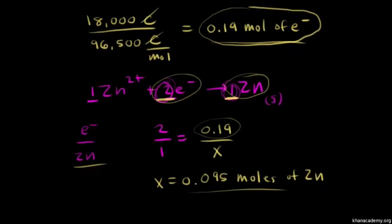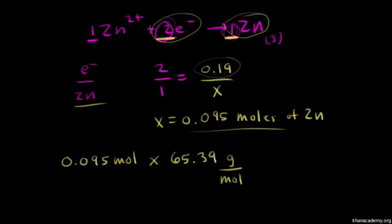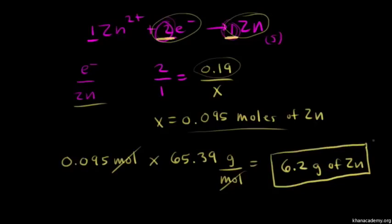Finally, we need to go from moles of zinc to grams of zinc. Our problem asked us for grams of zinc that were deposited. So going from moles to grams is pretty easy. You just multiply by the molar mass. So if you have 0.095 moles of zinc, and we multiply by the molar mass of zinc, which is 65.39 grams per mole, the moles cancel out, and that gives you grams. So we get 6.2 grams of zinc. That's our final answer. That's how much zinc deposits on the zinc electrode.